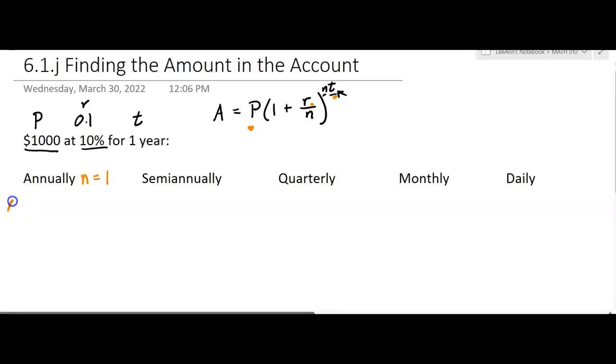So our amount is going to equal the principal, 1,000, times one plus 0.1, the rate, divided by one, because that's how often we're compounding it, to one times one. Now I'm going to do a lot of the work on the calculator, but I usually like to do some of it by hand if it's pretty easy to do. It makes it easier to put in the calculator.